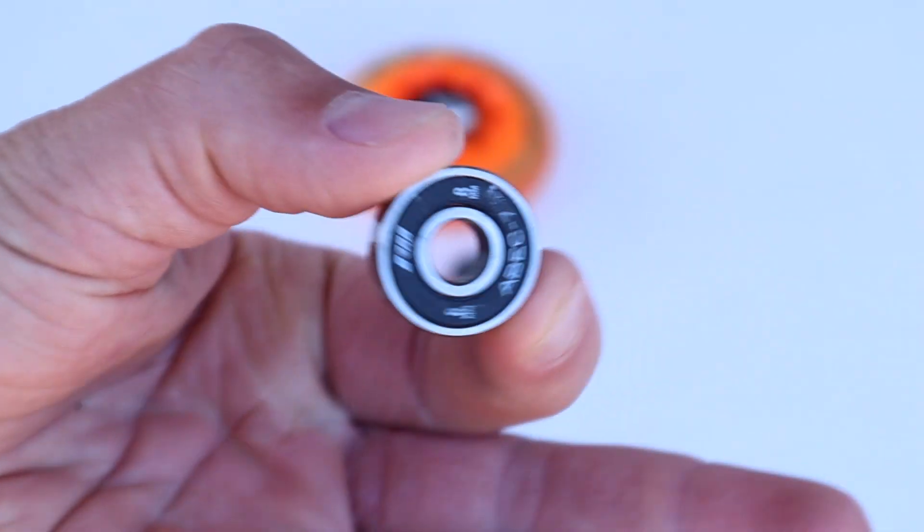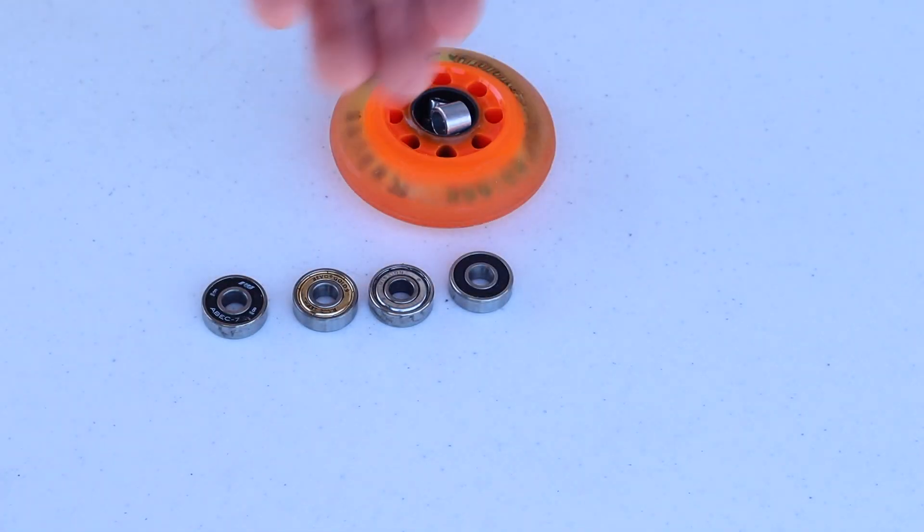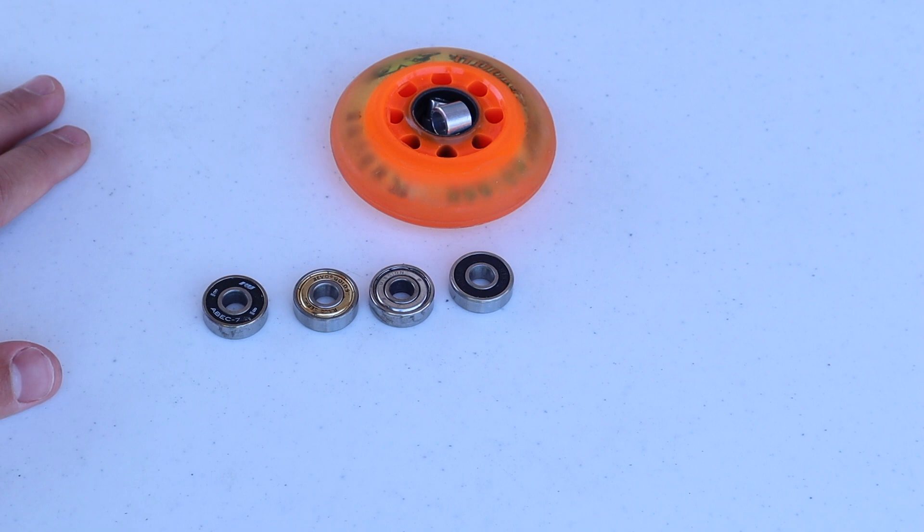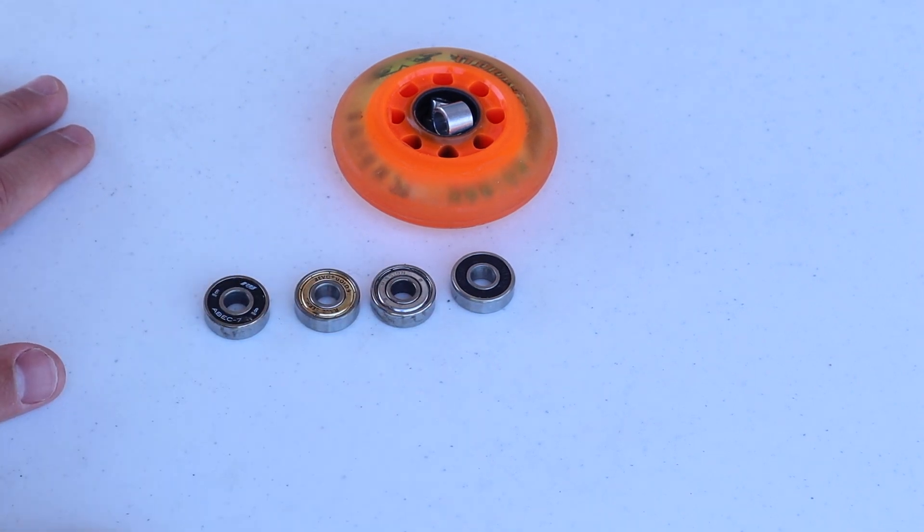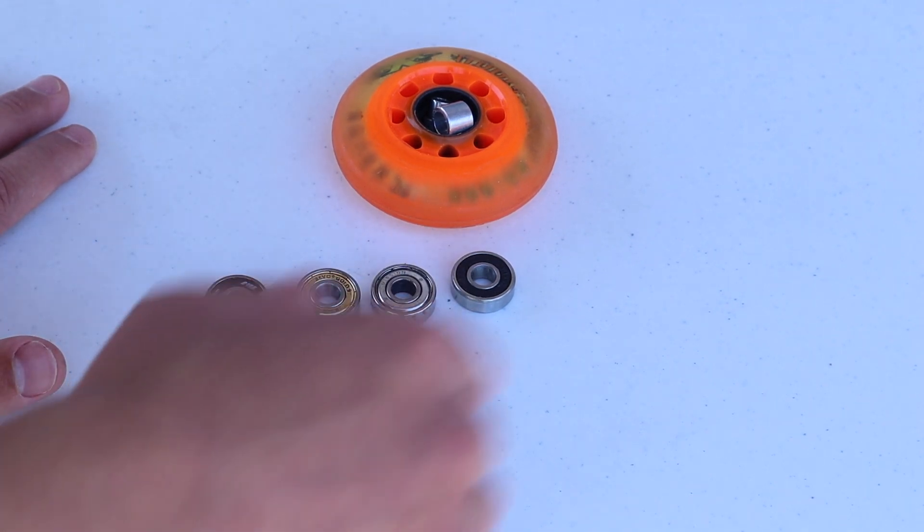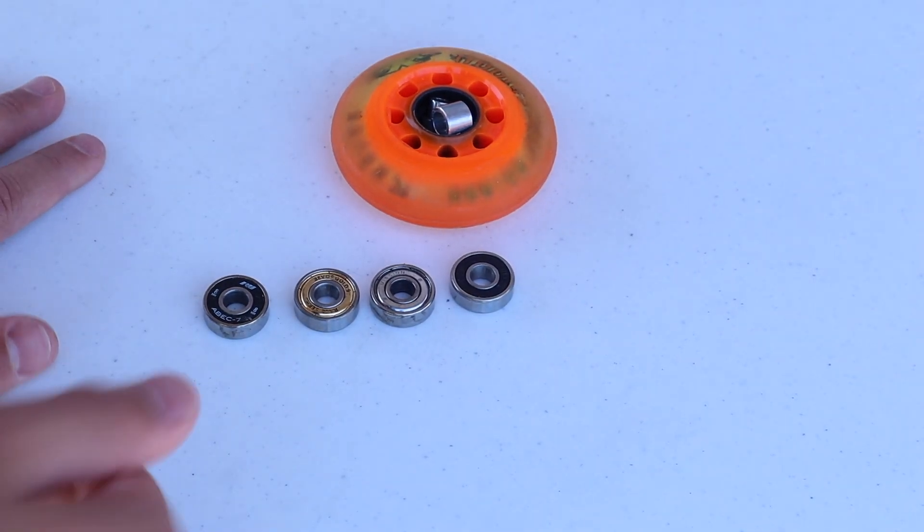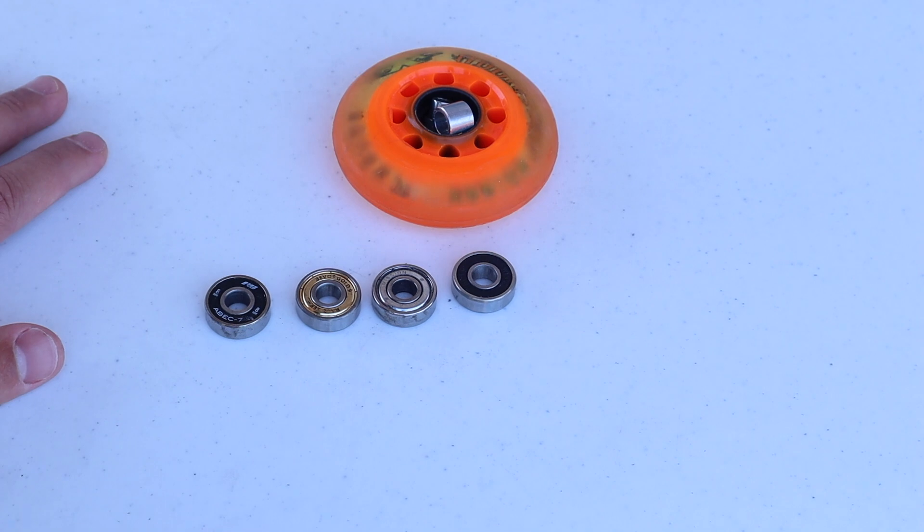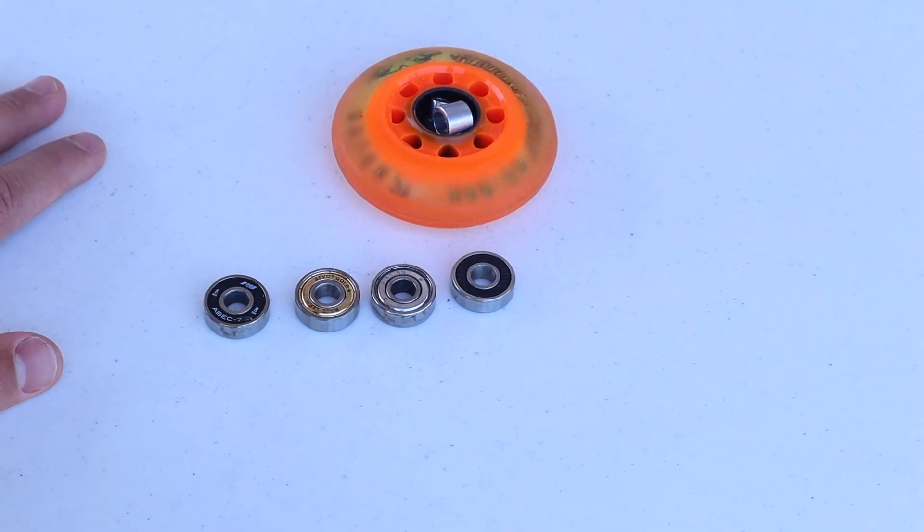They're all 608 sized bearings, which is just the size of the actual bearing. I'm going to talk about mainly the ABEC rating, which starts at ABEC 1, then goes to ABEC 3, then ABEC 5, 7, 9, and then Swiss. I'll talk about all those different ratings and tell you a little bit about each one.